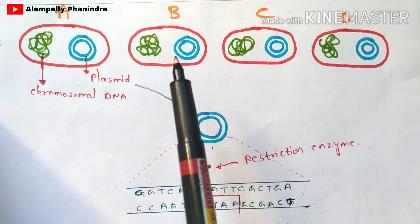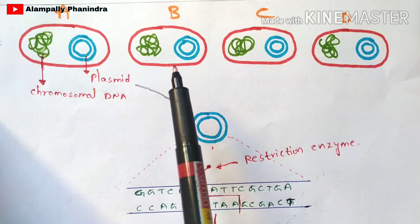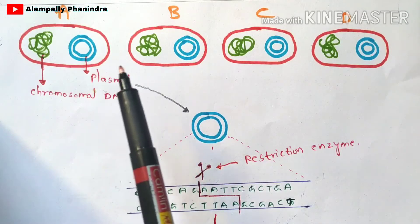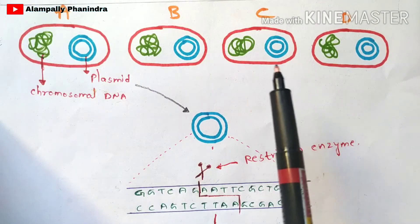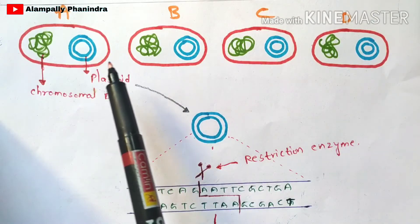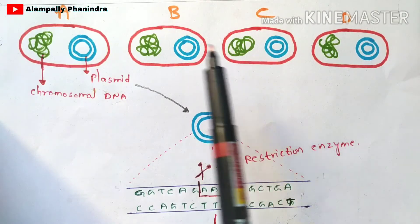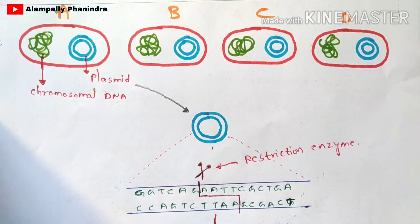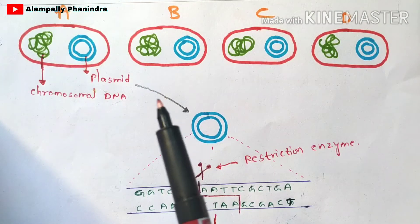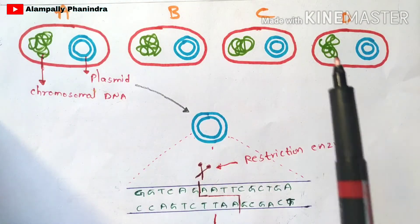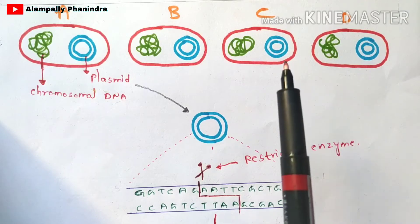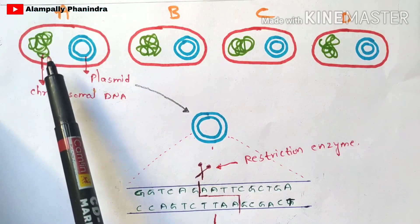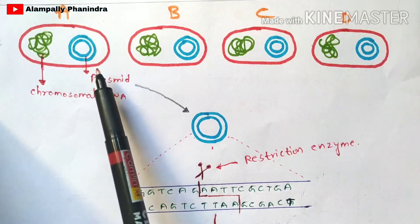We all belong to the same species called Homo sapiens, but the genetic information present in one human being is different compared to another. In the same way, here we are taking bacteria of the same species but their genetic orientation is different compared to all of these bacteria. The structure of the bacteria consists of chromosomal DNA as well as the plasmid.